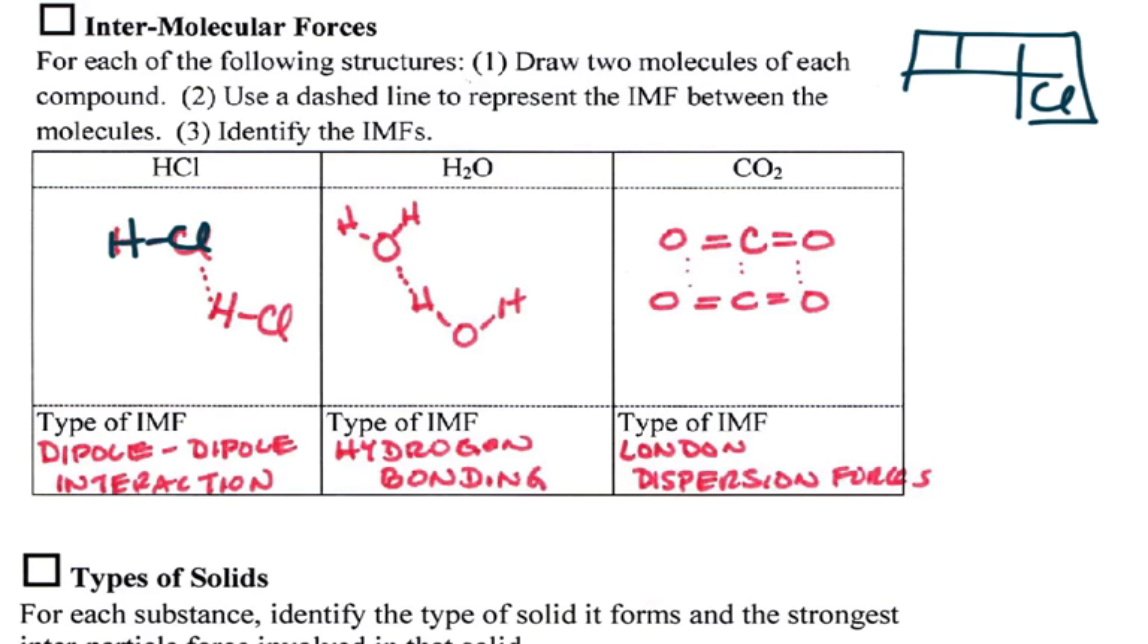So we draw two of them. We draw our little dotted line showing that the positive end of one molecule would be attracted to the negative end of the other molecule. So this would be positive here, this would be negative. This would be positive, this would be negative. It has dipole-dipole interactions, which we might shorten up to DDI.